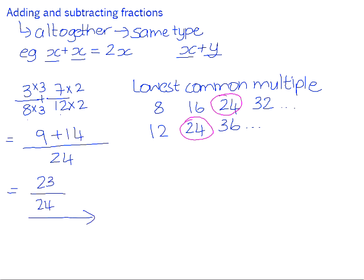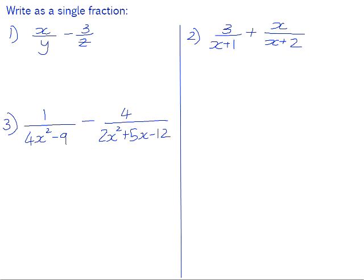Let's have a look at some algebraic examples. Number 1: x over y minus 3 over z. Now when we are dealing with algebraic numbers, because we don't know the specific value of y and the specific value of z.